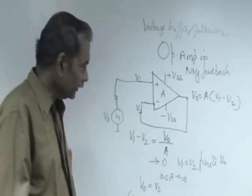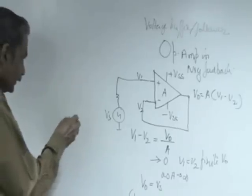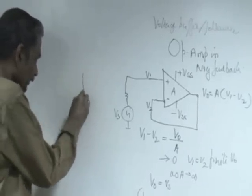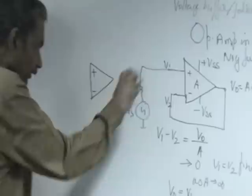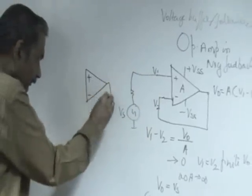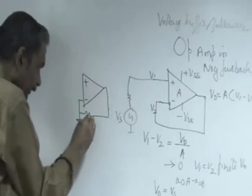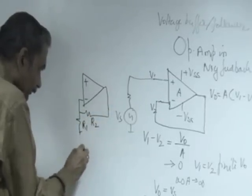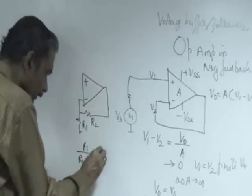We have just seen the unity gain amplifier. Extension to non-unity gain, that is higher gain amplifier non-inverting, is very simple. Instead of full feedback we are now giving partial feedback. Put an attenuator in the loop and that attenuation is R1 by R1 plus R2, let us call it as beta.